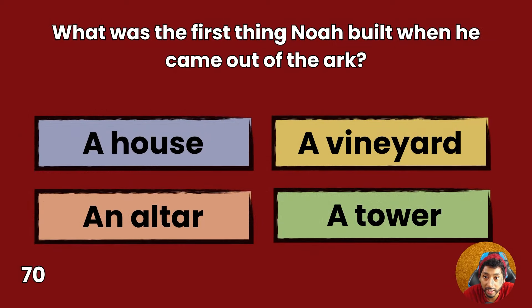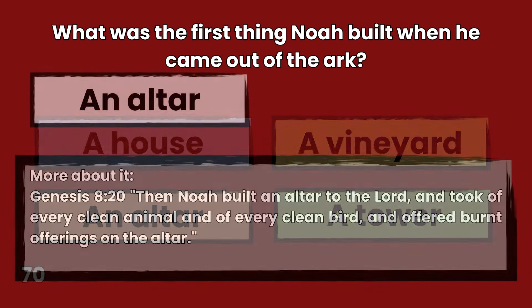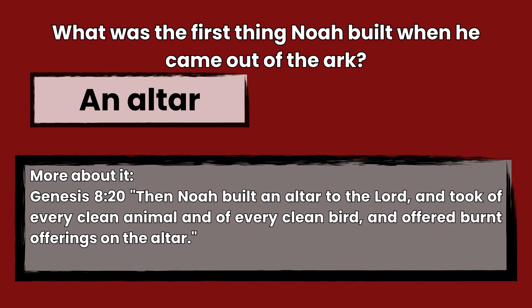Question 70: What was the first thing Noah built when he came out of the ark? A house, a vineyard, an altar, or a tower? Answer: An altar. Genesis 8:20 — Then Noah built an altar to the Lord, and took of every clean animal and of every clean bird, and offered burnt offerings on the altar.